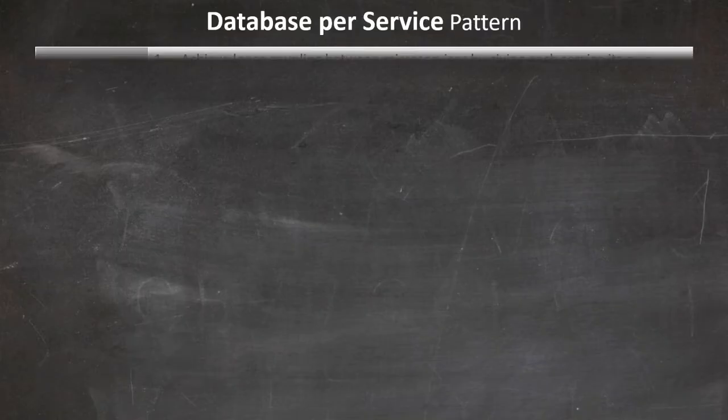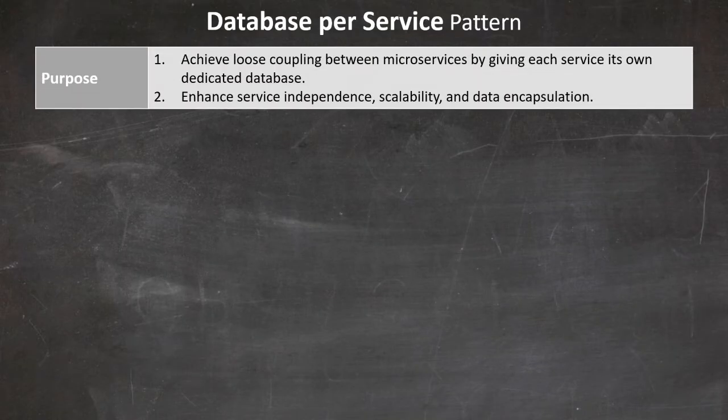Let us start with the database per service pattern. This pattern aims to achieve loose coupling between microservices by providing each service with its own dedicated database. This approach enhances service independence, scalability, and data encapsulation.